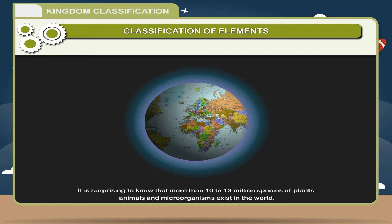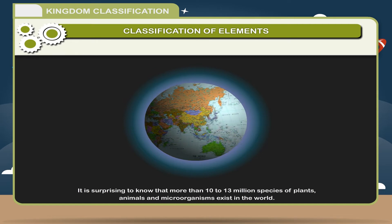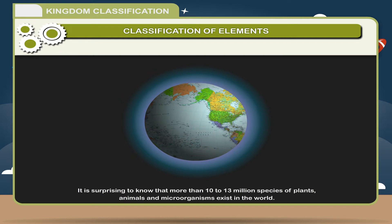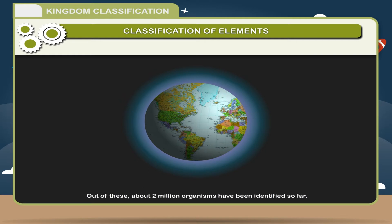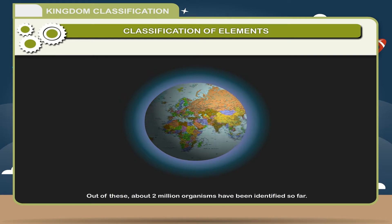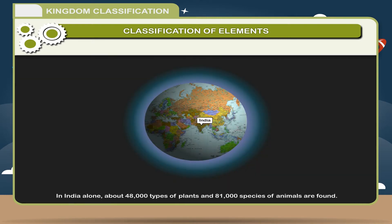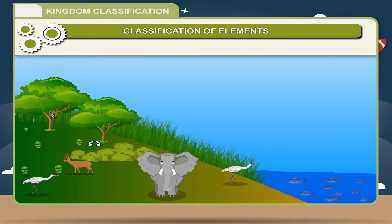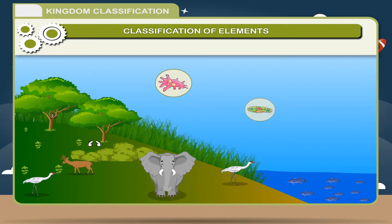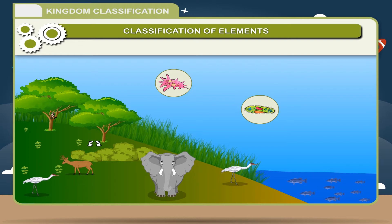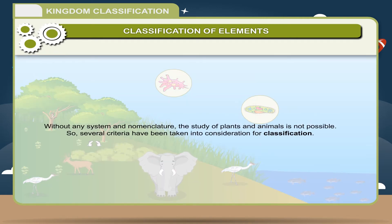It is surprising to know that more than 10 to 13 million species of plants, animals and microorganisms exist in the world. Out of these, about 2 million organisms have been identified so far. In India alone, about 48,000 types of plants and 81,000 species of animals are found. Plants and animals are widely distributed on land, water, and many small organisms are also found in the atmosphere. Bacteria are present in very hot to very cold climates. Without any system and nomenclature, the study of plants and animals is not possible.